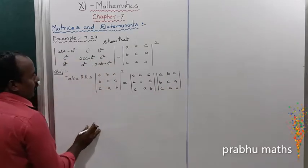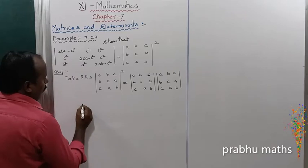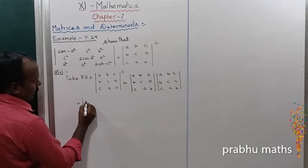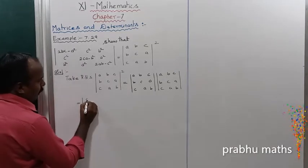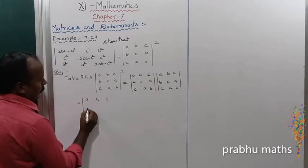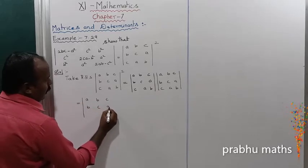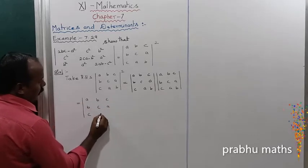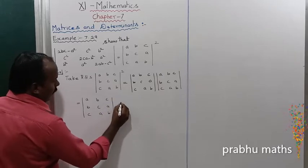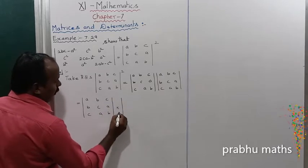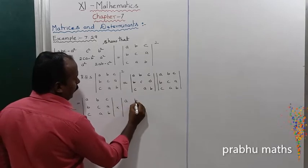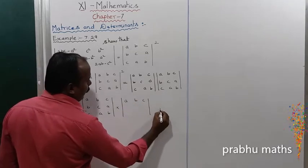Now, this is the product of two determinants. The first matrix has no row changes: [a,b,c; b,c,a; c,a,b]. For the second matrix, the first row also has no changes: a, b, c.